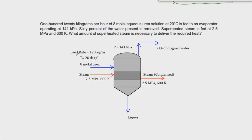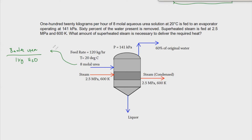To solve this problem, first I would like to take 8 molar urea and convert that in terms of mass fraction. 8 molar urea means 8 moles of urea divided by 1 kilogram of solvent — water in this case. If the problem doesn't mention the solvent, always assume it's water, because technically how would you vaporize water if there's no water in the feed?